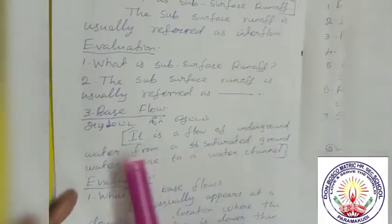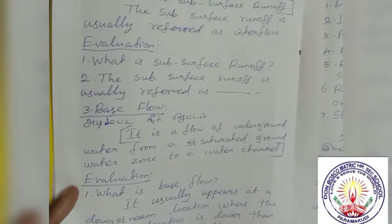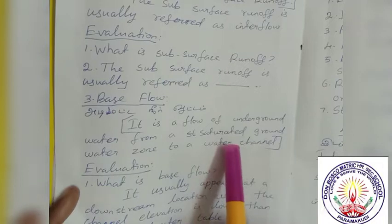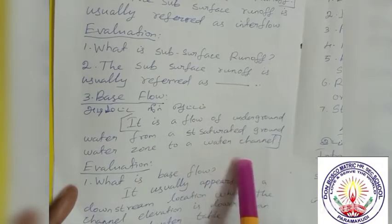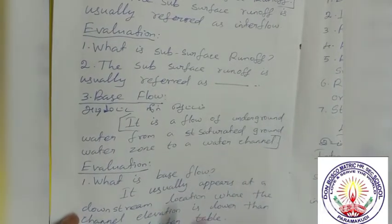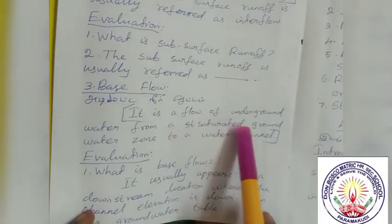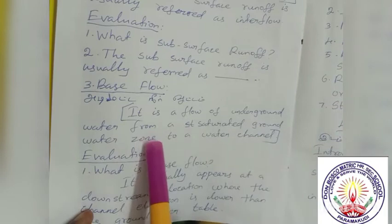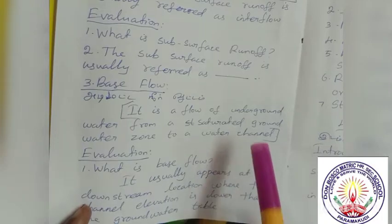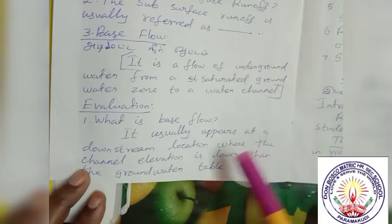Third point: Base flow. Base flow is a flow of underground water from a saturated groundwater zone to a water channel. It usually appears at a downstream location.